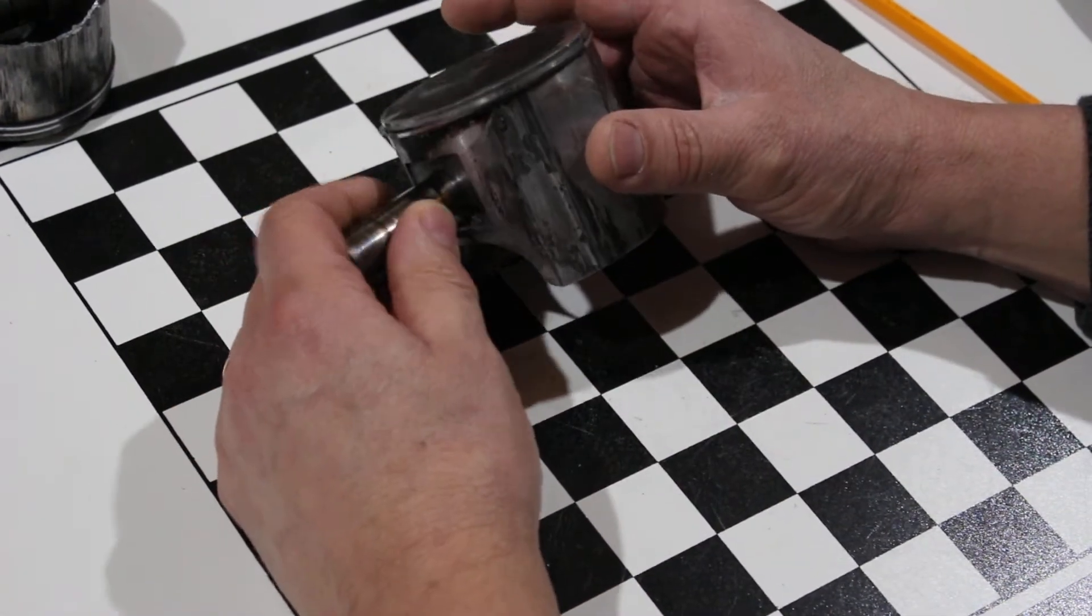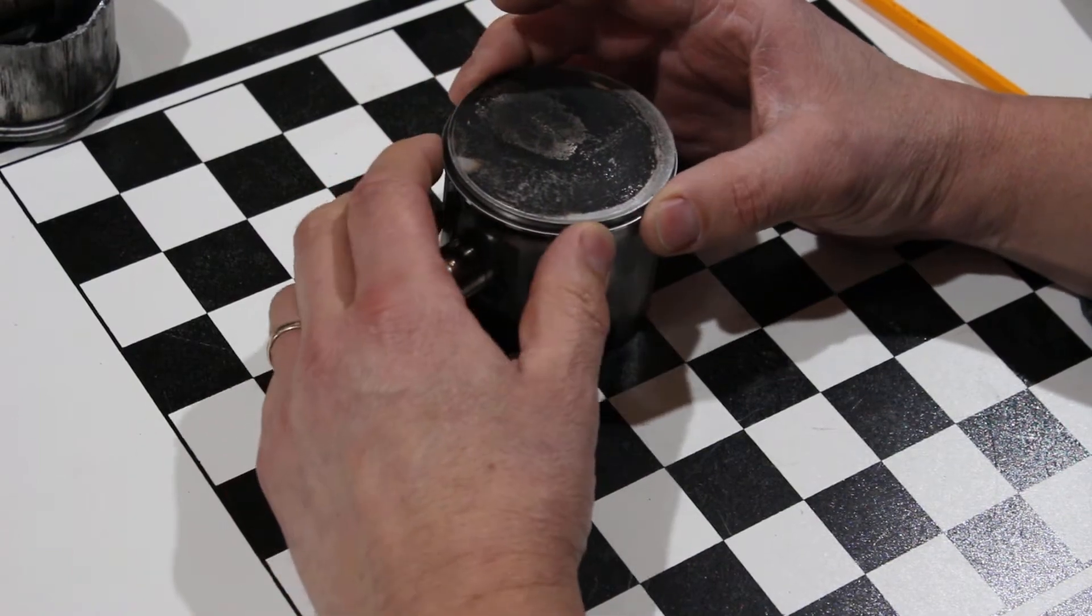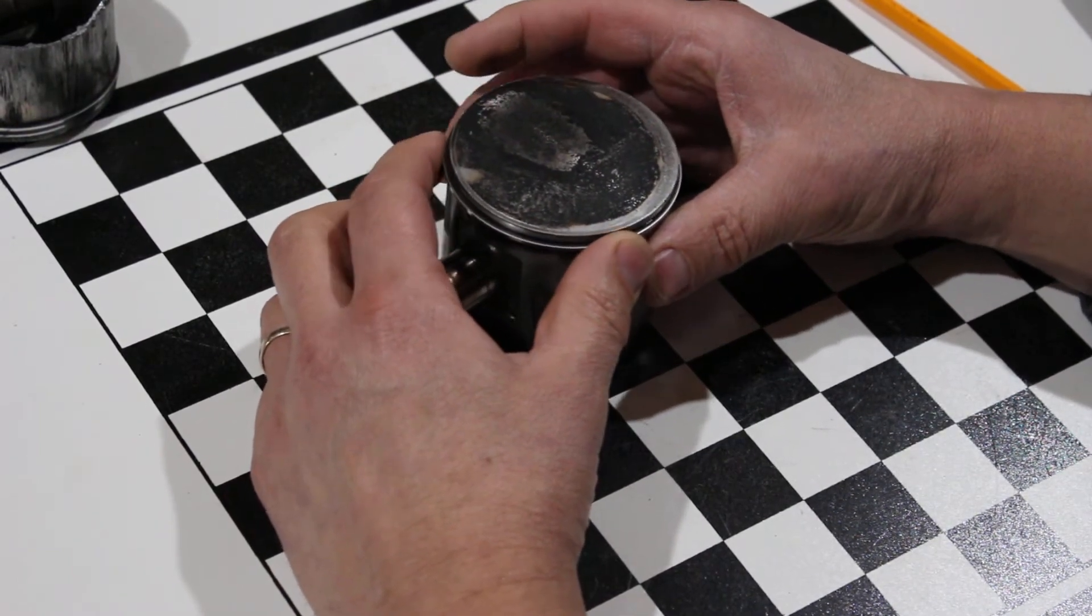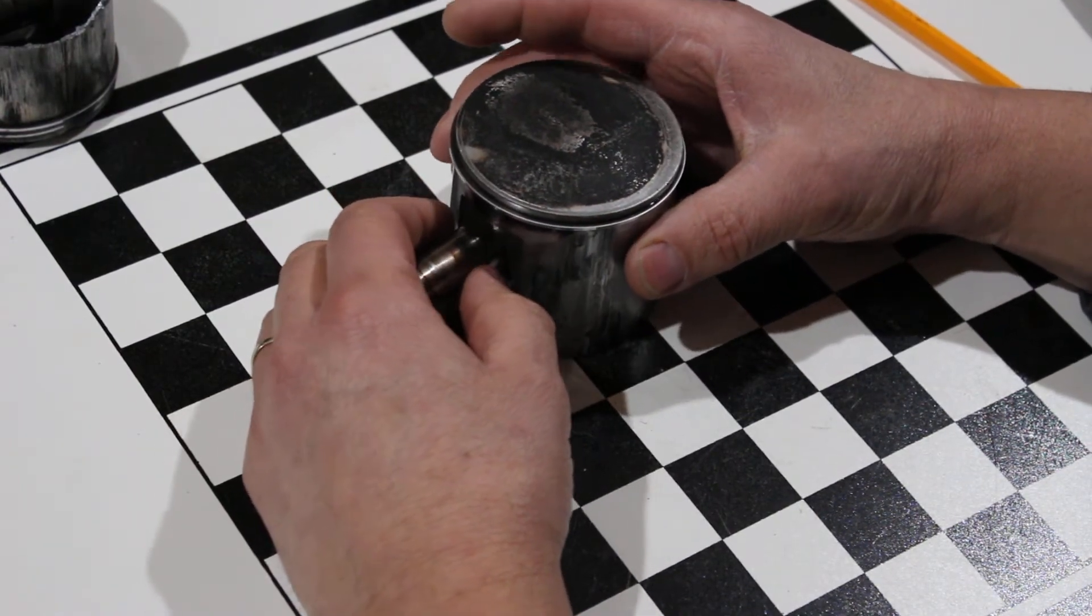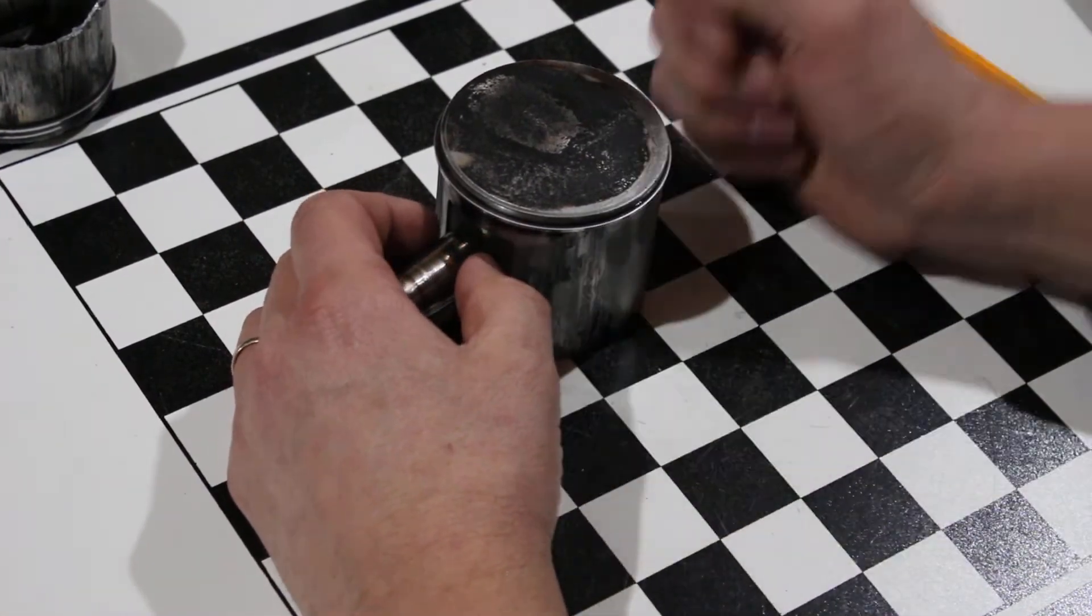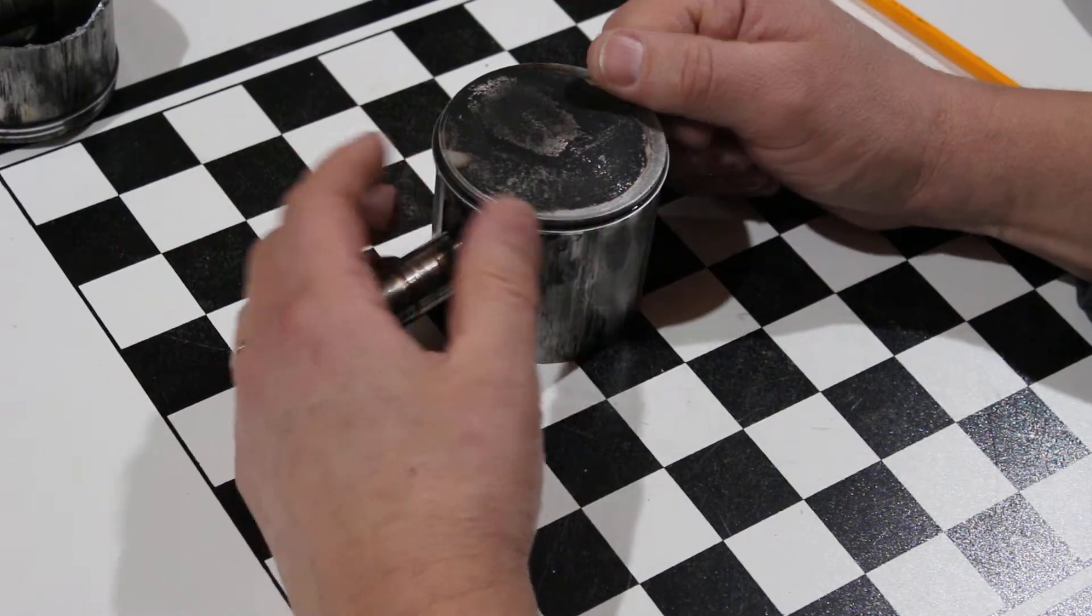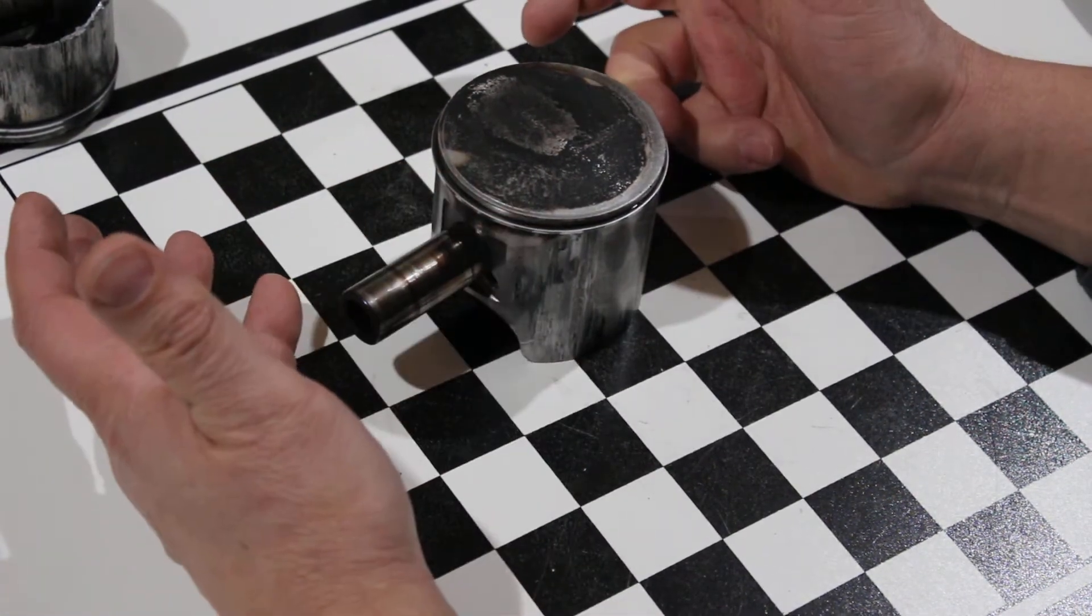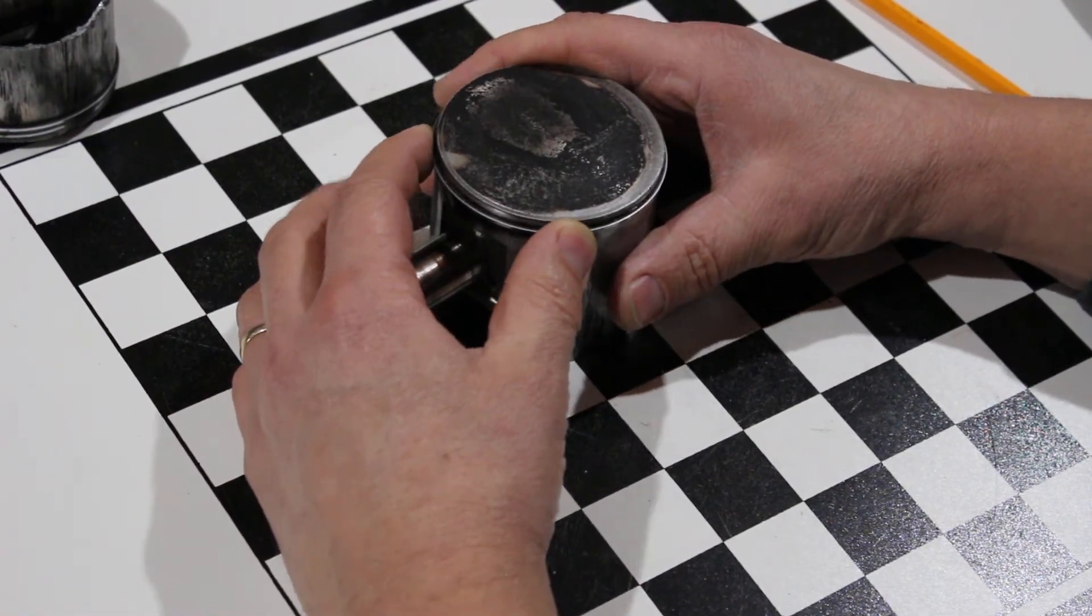The symptom for that when you're riding is you'll get halfway down the driveway or halfway across the field, and all of a sudden the engine will bog and stop. When you go to restart it, if it's a pull-start sled, the pull rope won't even go. If you've got an electric start, your starter won't wind over. Essentially your engine seized up. If you're fortunate...